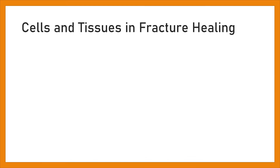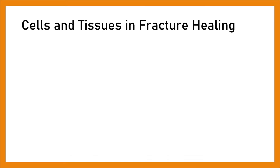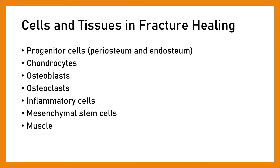Cells and tissues in fracture healing consist of: progenitor cells of the periosteum and endosteum, chondrocytes, osteoblasts, osteoclasts, inflammatory cells, mesenchymal cells, and muscle.